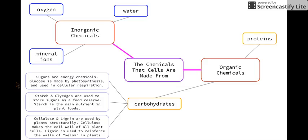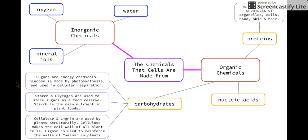The next group of organic compounds we're going to look at are proteins. So proteins are the main structural chemicals of organelles, cells, bone, skin, and hair. So basically all life is built from proteins. Proteins are polymers that are made up of amino acid molecules that are joined together to form chains.